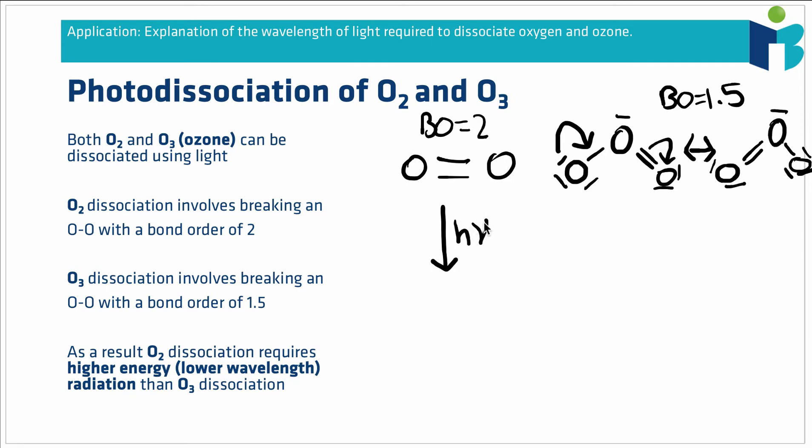The h is Planck's constant, the nu represents the actual frequency of that light required to induce this process. What we get is we break this oxygen-oxygen double bond and end up with two oxygen atoms. We put a dot here to show those oxygen atoms are radicals with unpaired electrons that are very reactive.